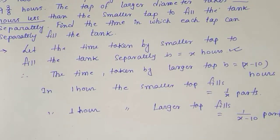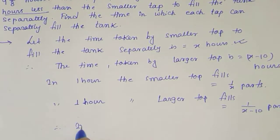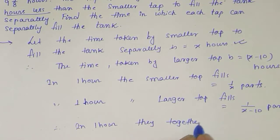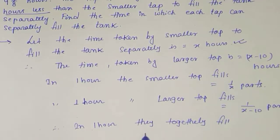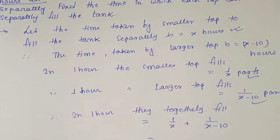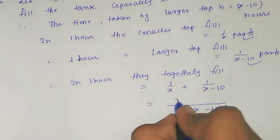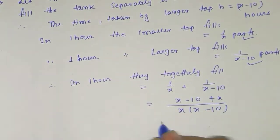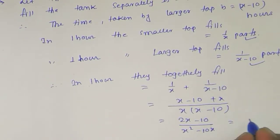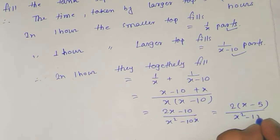Now we need the total part they fill together in one hour. So in one hour they together fill 1/x plus 1/(x minus 10). Simplifying this gives (2x minus 10) divided by (x squared minus 10x), which can also be written as 2(x minus 5) divided by (x squared minus 10x) parts.